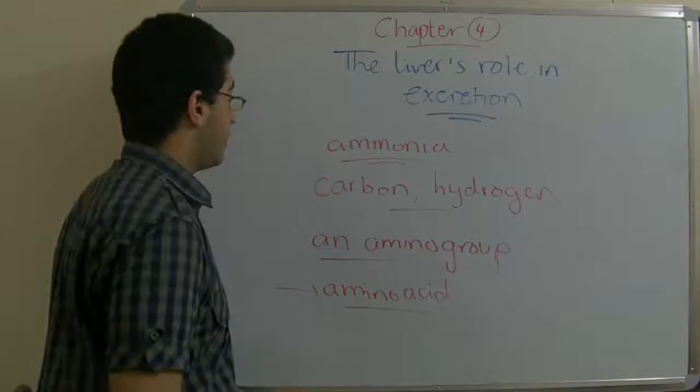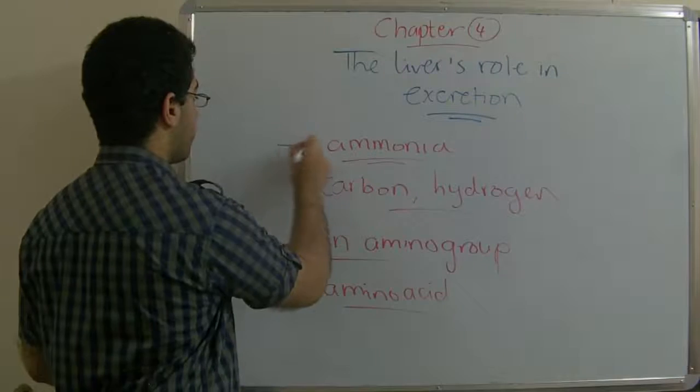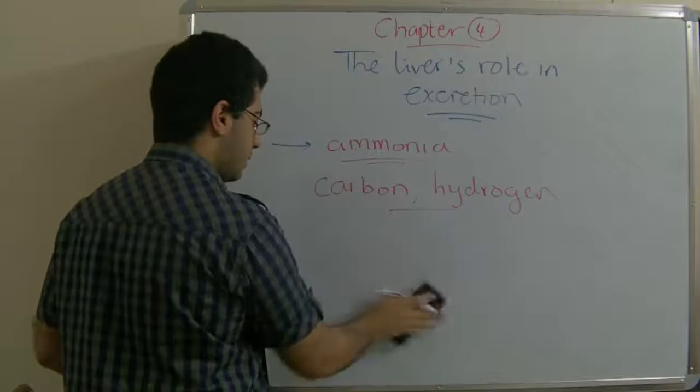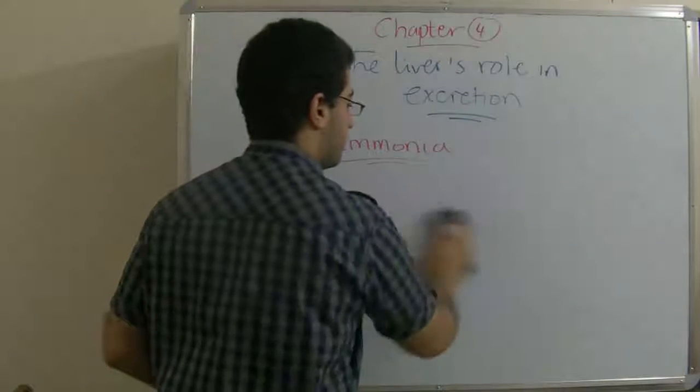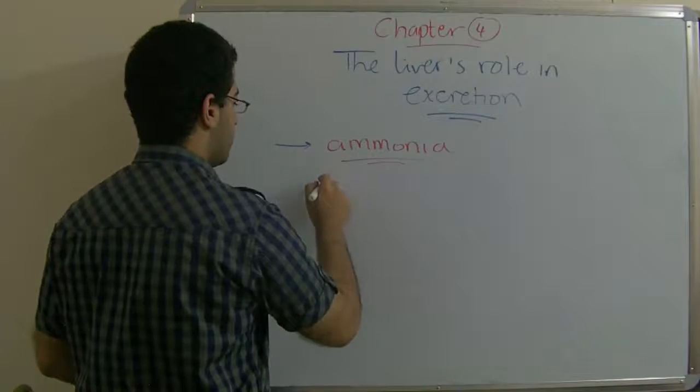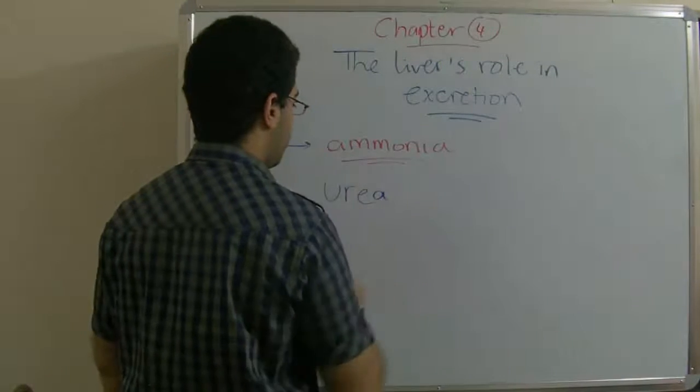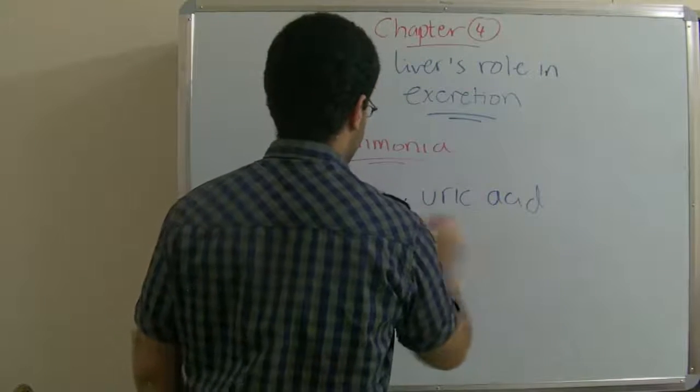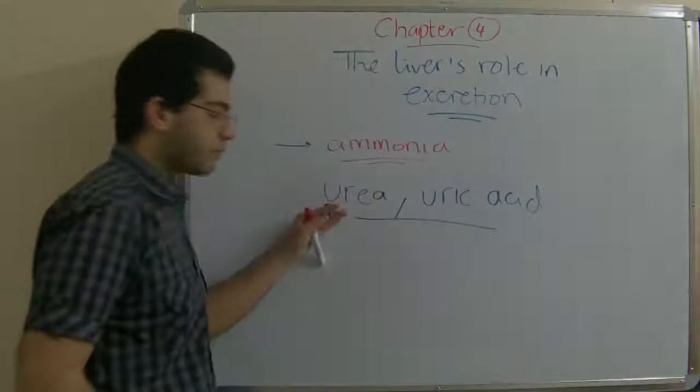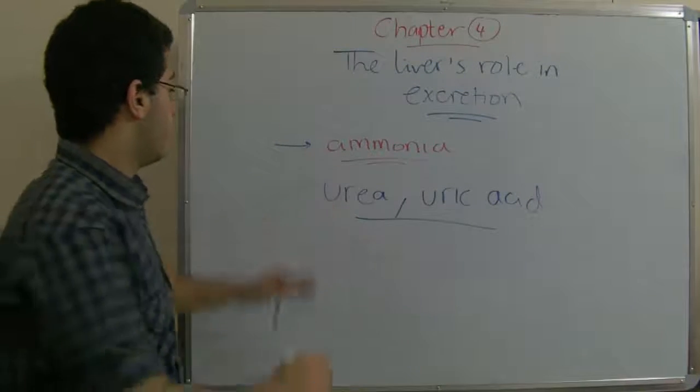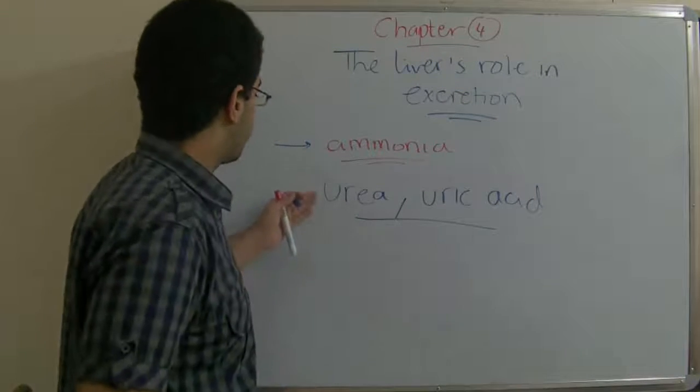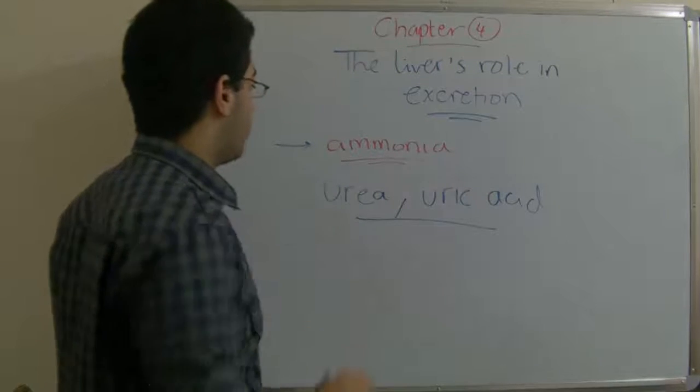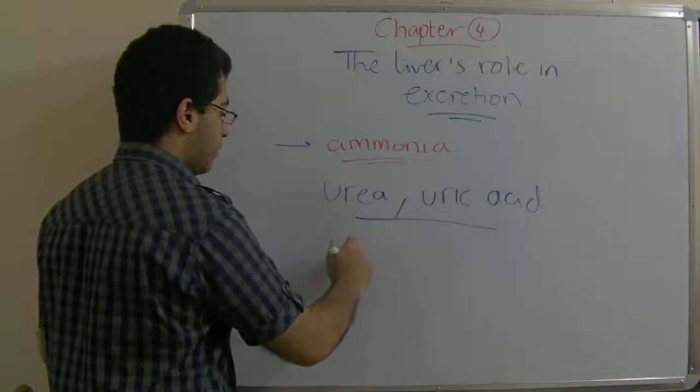So the liver's role here is to change this ammonia into urea and uric acid. This can easily move through the blood vessels from the liver and be excreted outside the body inside the urine.